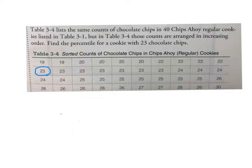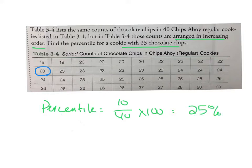Back to the chocolate chips. This one says the table lists chocolate chips in 40 Chips Ahoy regular cookies arranged in increasing order. Find the percentile with 23 chocolate chips. They must be arranged in increasing order before you do this. I went ahead and circled the 23. I'm going to count the number of cookies below 23. If I do that, I get 10. Using our formula, the percentile would be 10 over the total number which is 40 times 100. 10 over 40 is 0.25 times 100 would be 25 percent, the 25th percentile, which means 25 percent of the cookies have less than 23 chocolate chips and 75 percent have that many or more.